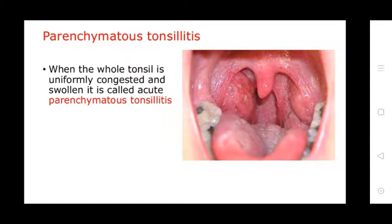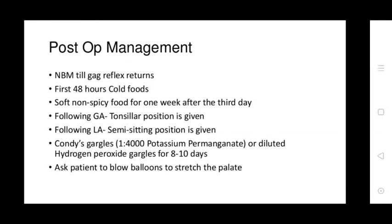Surgical treatment is tonsillectomy. Post-operative management: NBM until gag reflex returns in the first 24-25 hours. Cold, non-spicy foods are given. From the third day, the flowing lateral position is changed to a semi-sitting position. Gargles using 1:4000 potassium permanganate or diluted hydrogen peroxide are given for 8 to 10 days.